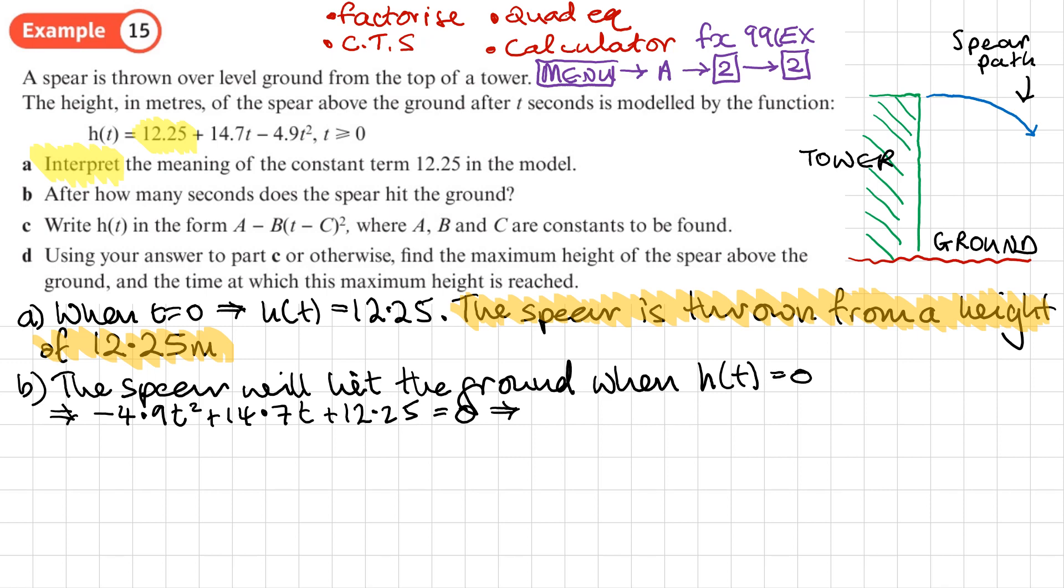Press equals again and I get my first solution, and it's (3 + √19)/2. Now I don't really want a surd answer if it's a time, so if I press the SD button I can see that I get 3.67944 and so on. I'll probably want to give that to 3 significant figures, so that would be 3.68 seconds.